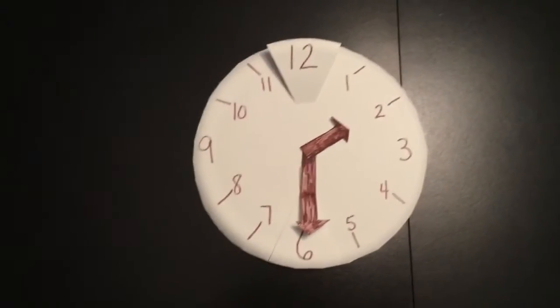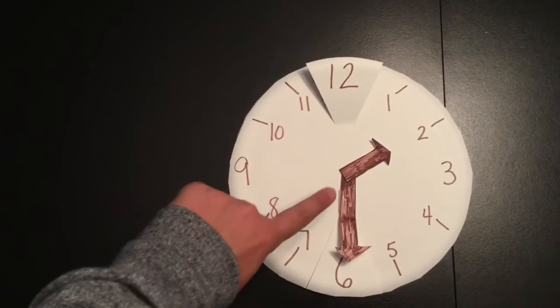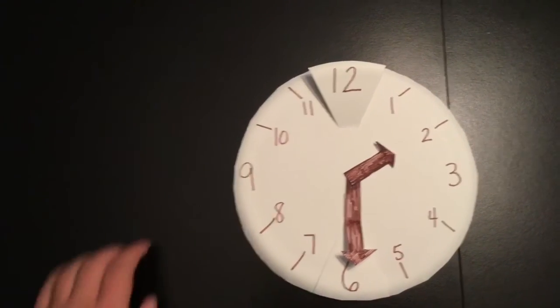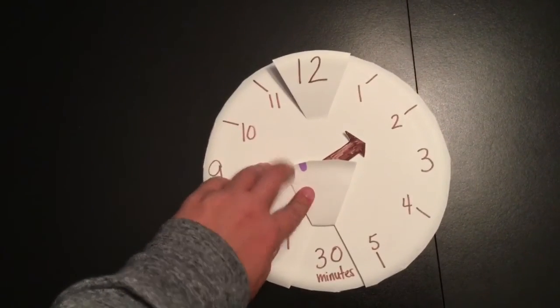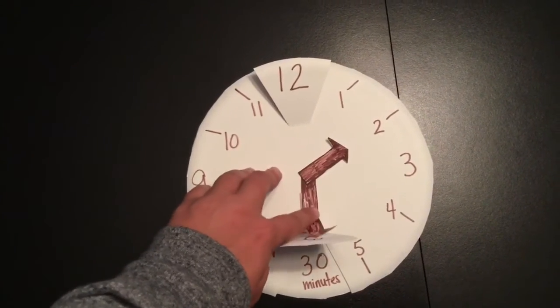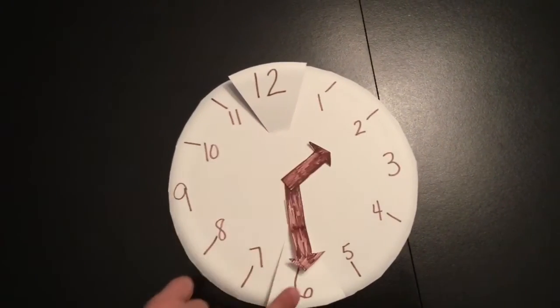Now my hour hand is pointing to the 2 and my minute hand is pointing to the 6. So if I look under the 6 I now remember that 6 means 30 minutes, so I know it is 2:30.